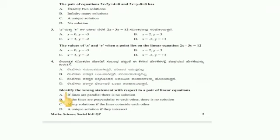The next question: identify the wrong statement with respect to a pair of linear equations. Option A: if lines are parallel there is no solution—correct statement.